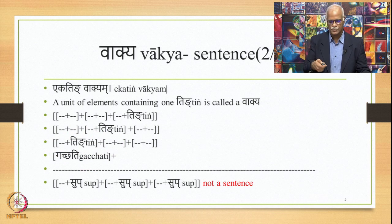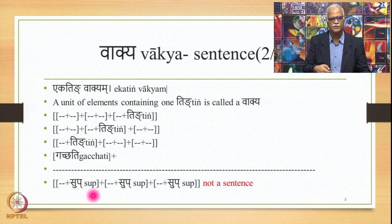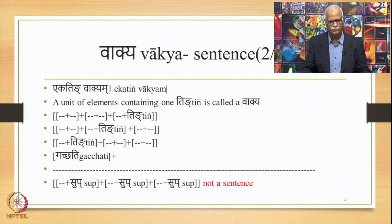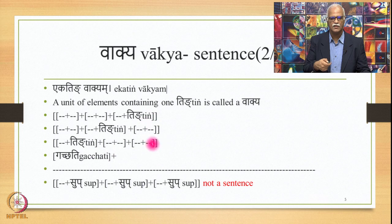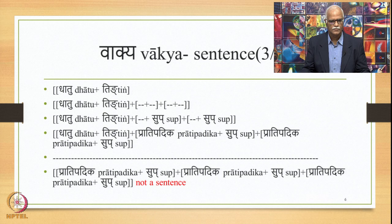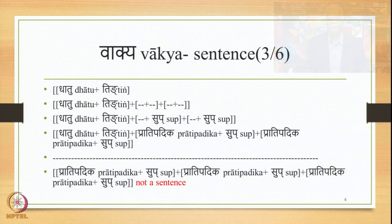However, if we have a situation where there are three words and the right-hand side element in all three words is occupied by a Sup — meaning there is no Tiṅ — then this cannot be called a sentence. A unit or group of elements in which appears one Tiṅ is called a sentence. So a unit with a Tiṅ qualifies as a sentence, and this expanded understanding is now clear.